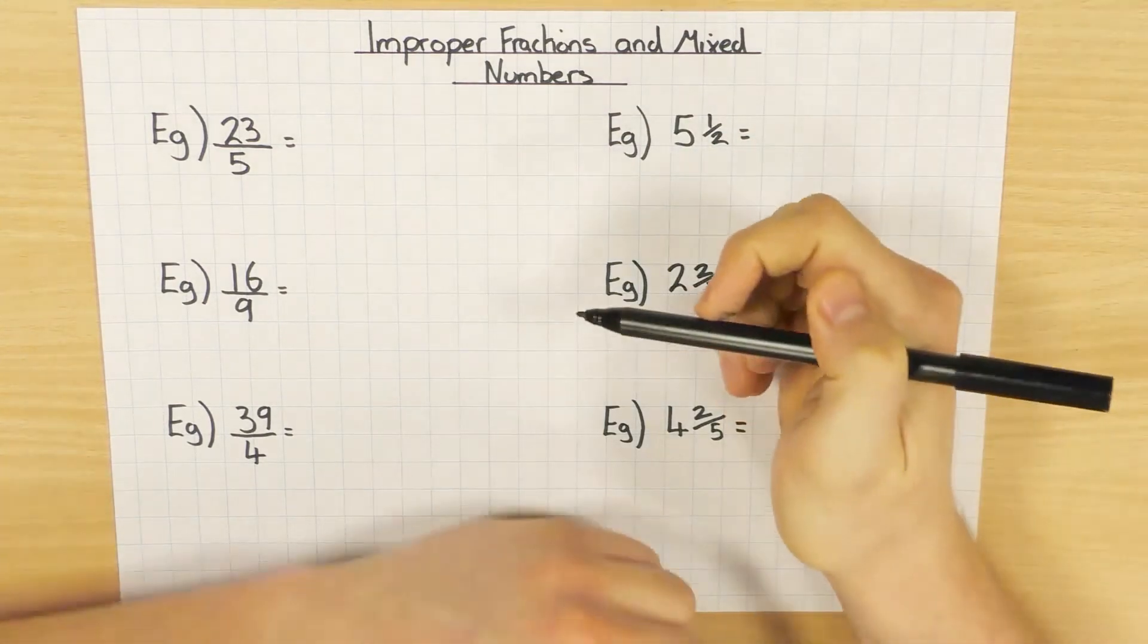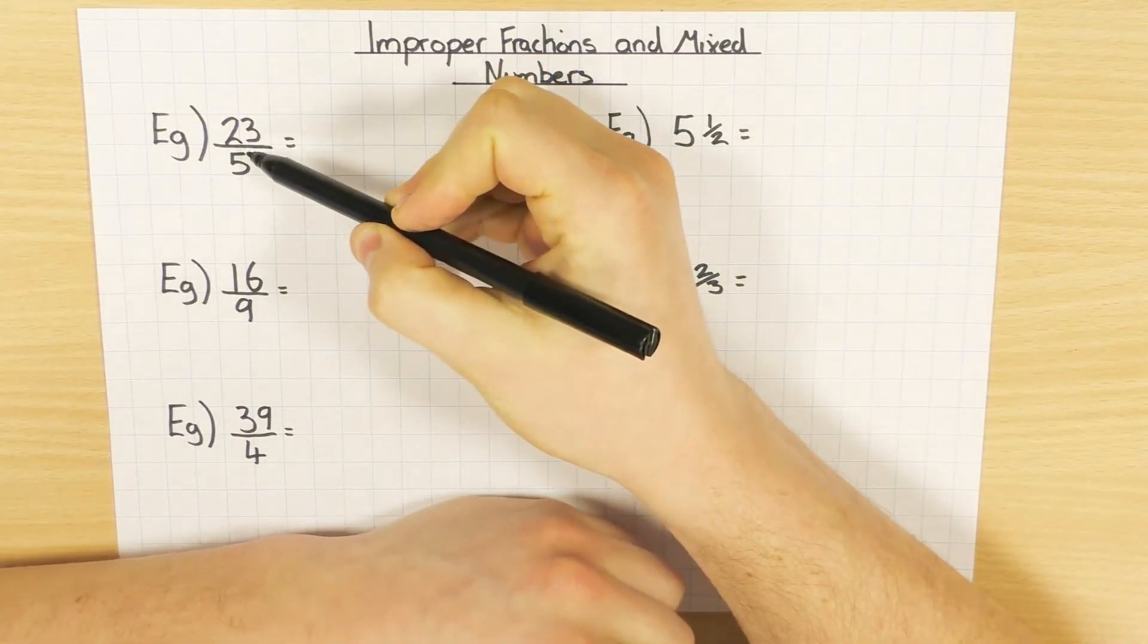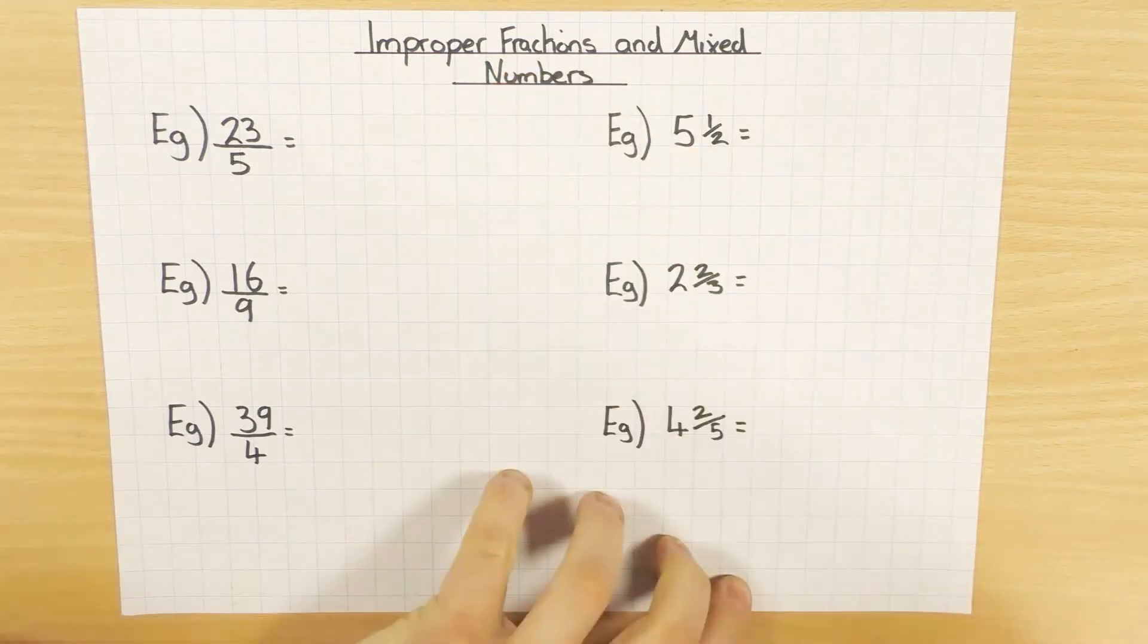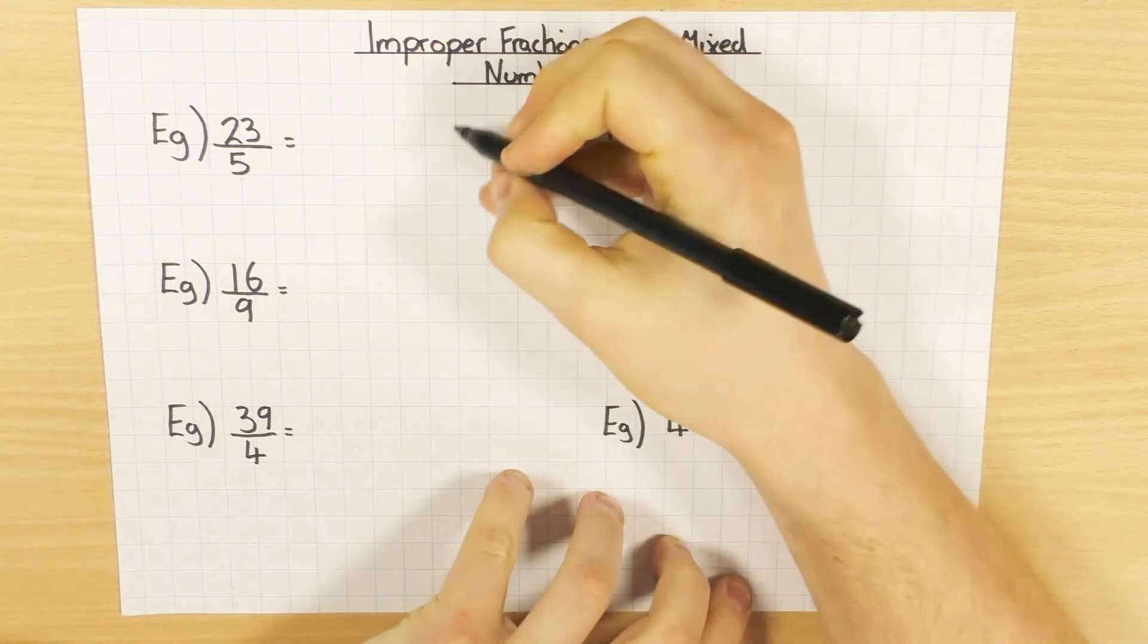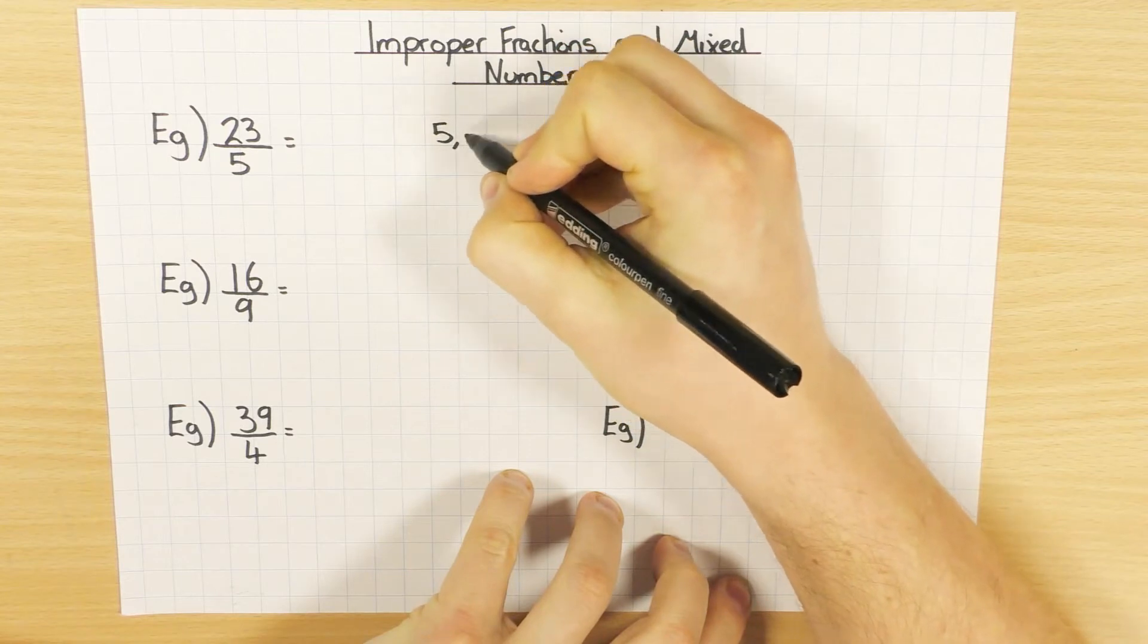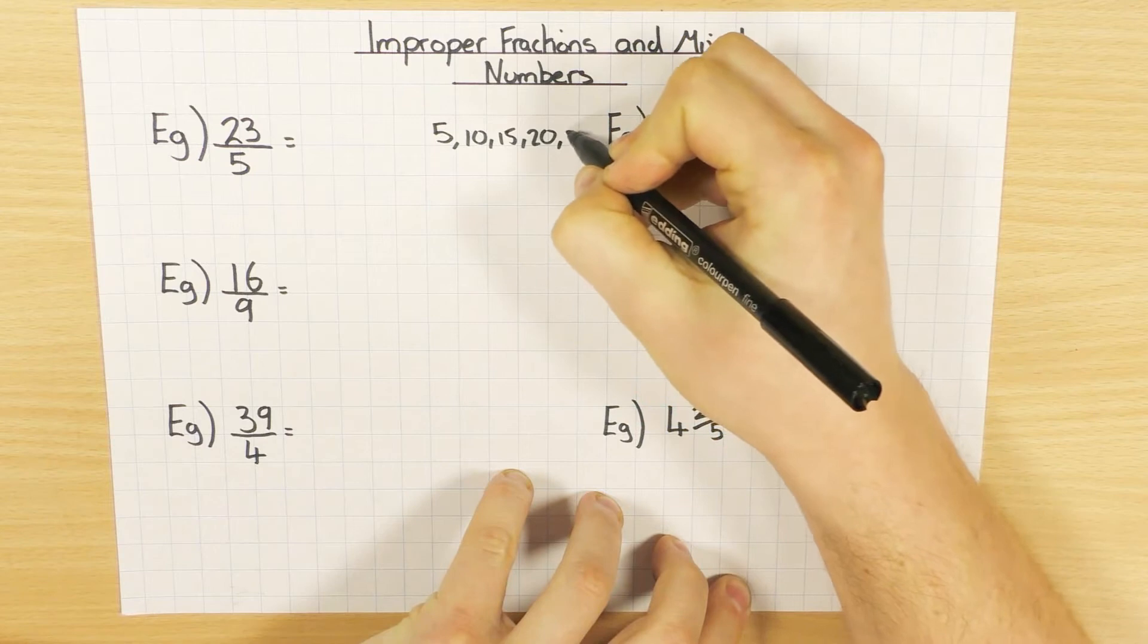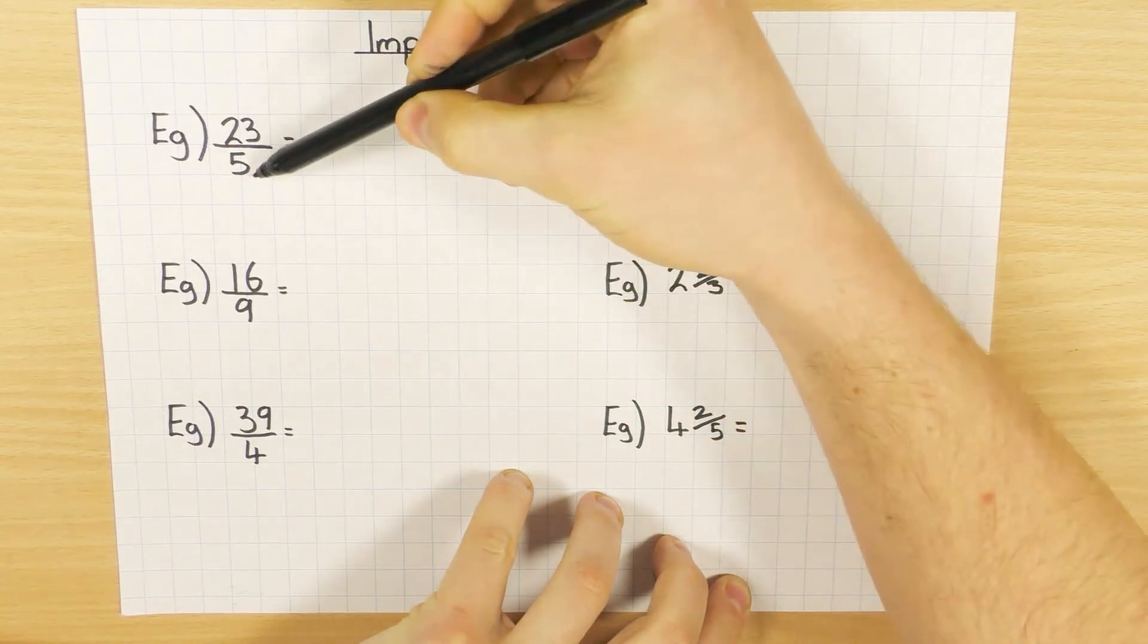So to do that, we see how many 5's go into 23. Now if you're good at your times tables, that's quite nice and easy. If you're a bit unsure, you can just write out your 5 times table really quickly. So 5, 10, 15, 20, 25.